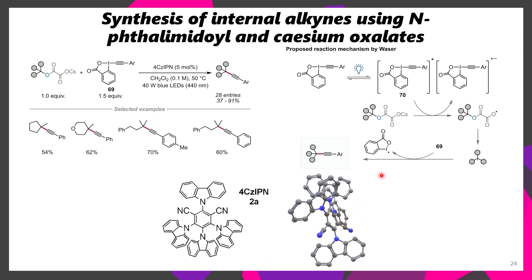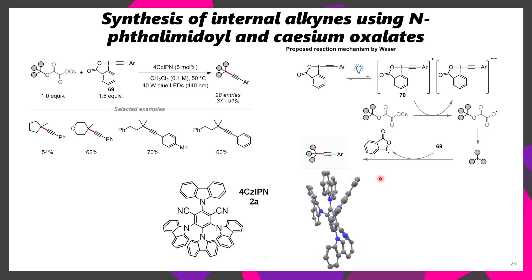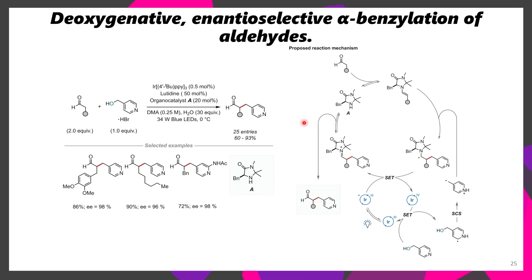Other organocatalysts can be used to make radical functionalization a little bit easier. Here we have this iridium photocatalyst used to do the photoredox, and the imidazolidinone catalyst A helps make this process easier. When you have an aldehyde you can form an enamine — this is an enamine derivative of the imidazolidinone. This can then react with the radical generated from the corresponding 4-pyridine methanol, which adds into the enamine, generates an alpha radical, and this alpha radical can be oxidized to the corresponding iminium. This iminium can be hydrolyzed forming the corresponding aldehyde product.